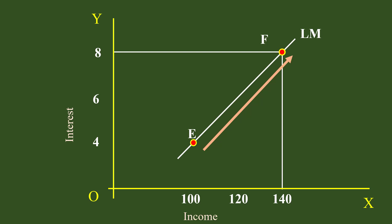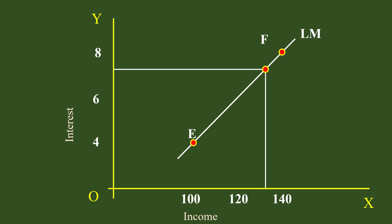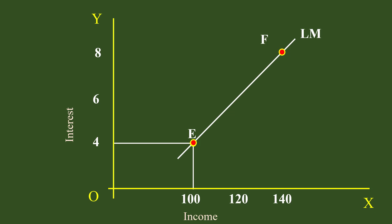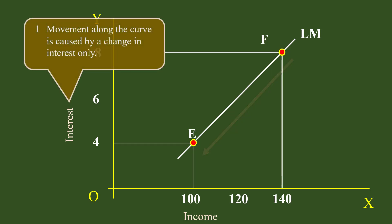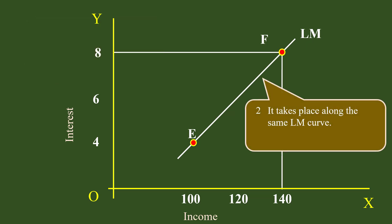Again, when interest falls from 8% to 4%, the income decreases from Rs.140 to Rs.100. The money market moves down from point F to E. This is movement along the curve. The key points are: 1. Movement along the curve is caused by a change in interest only. 2. It takes place along the same LM curve. 3. The position of the LM curve doesn't change.